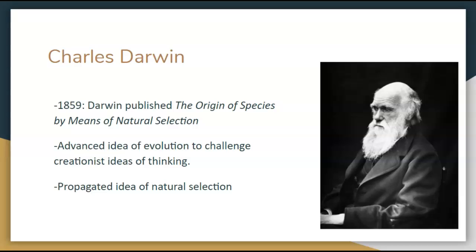This book outlined his ideas of evolution and argued the development of species. He argued that populations tend to grow faster than the food supply, and so species had to compete for food. Those that survive this competition are the fittest, or best adapted to the environment. The surviving members then bred species that shared their advantage. Over many years and generations, a species may develop, change, or evolve. This propagated the idea of natural selection — the idea that nature will weed out those less fit.